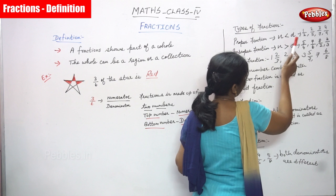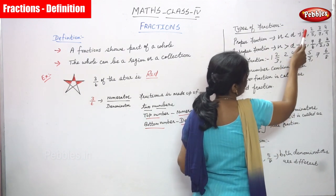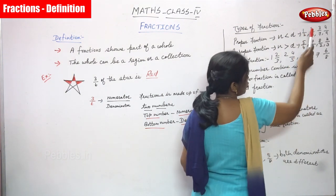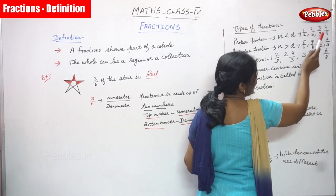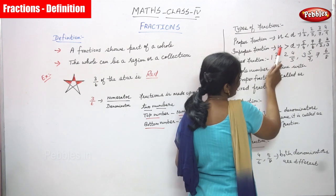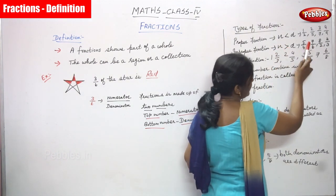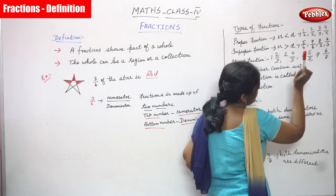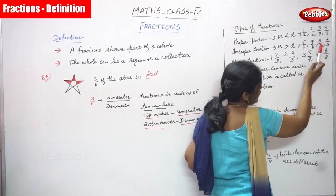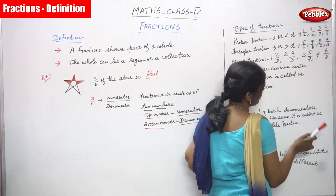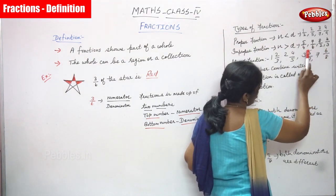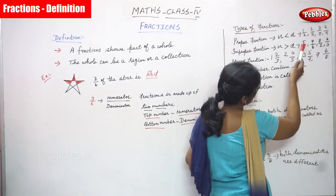Proper fraction examples: the numerator is always less than the denominator. So 1 by 2 — 1 is less than 2; 2 by 5 — 2 is less than 5; 3 by 7 — 3 is less than 7; 4 by 9 — 4 is less than 9. Improper fraction: the numerator is always greater than the denominator. So 5 by 4 — 5 is greater than 4; 7 by 6 — 7 is greater than 6.